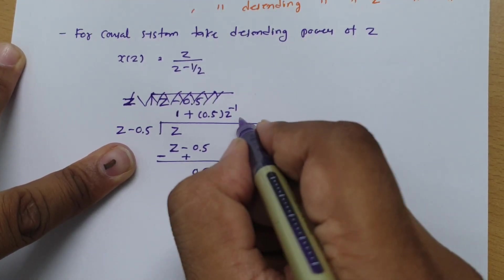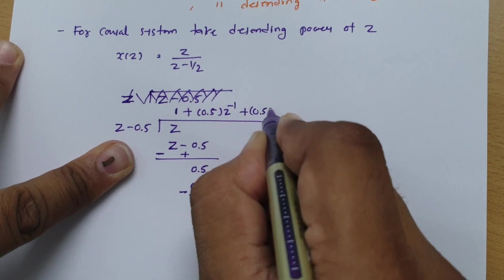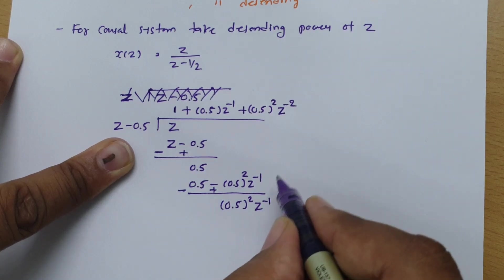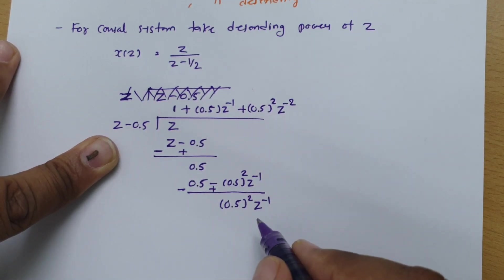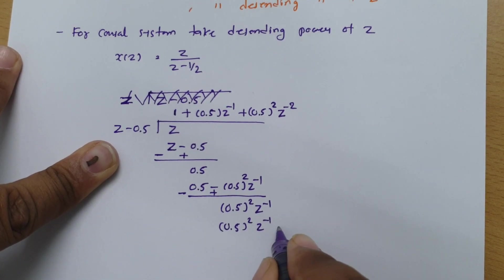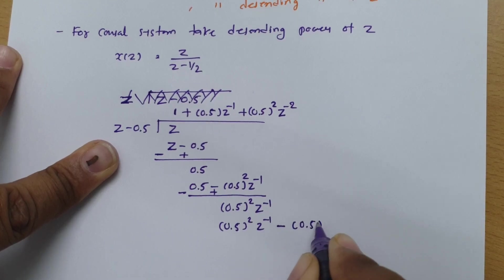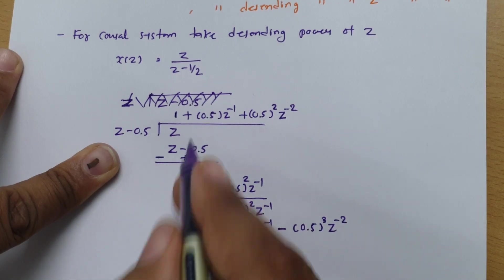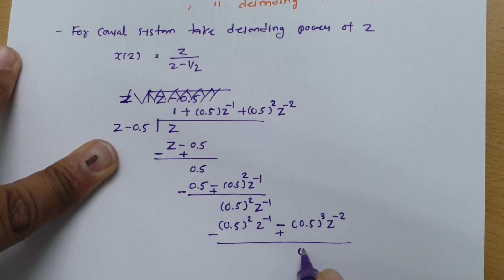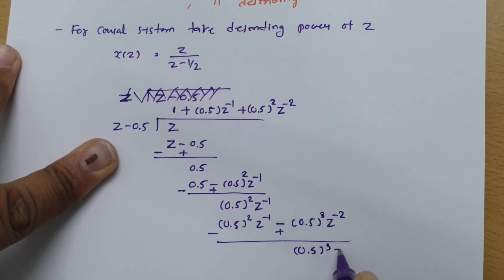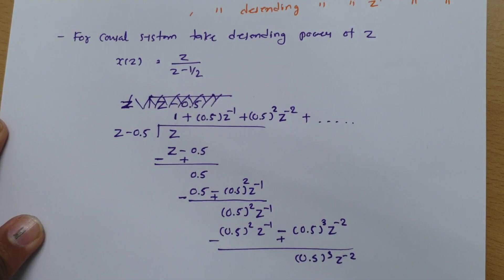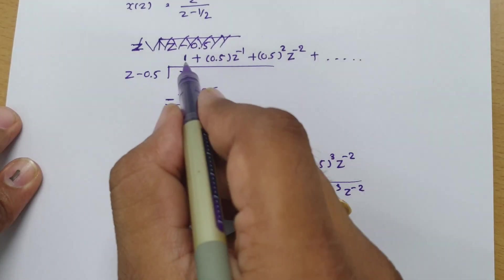To eliminate 0.5 squared Z inverse, we multiply by Z raised to minus 2, giving 0.5 squared Z inverse minus 0.5 cubed Z raised to minus 2. After subtracting, the remainder becomes 0.5 cubed Z to the power minus 2. This process continues in the same manner.